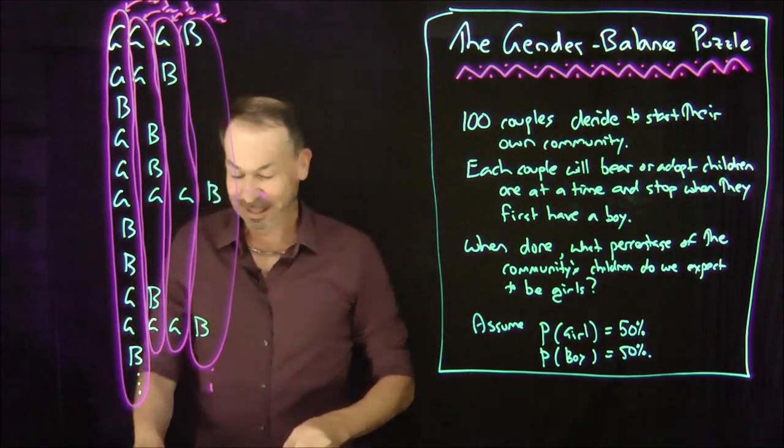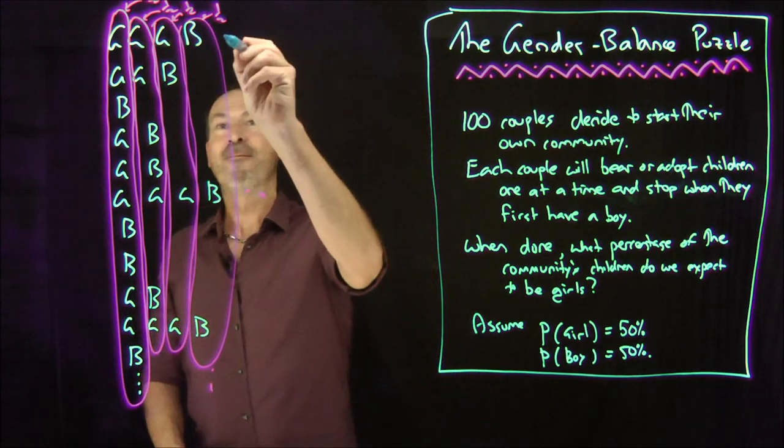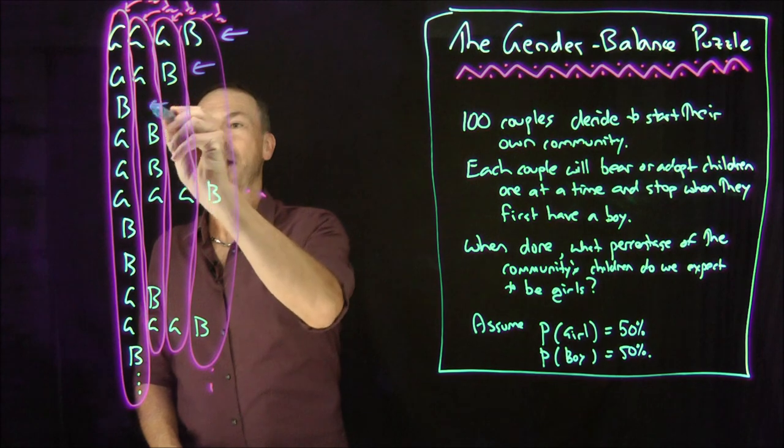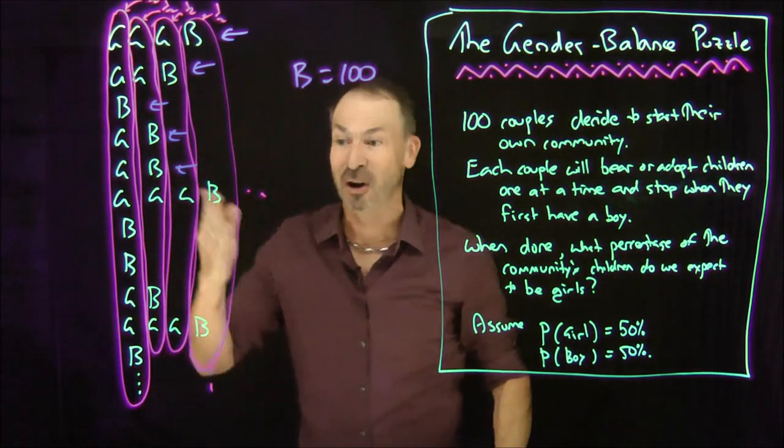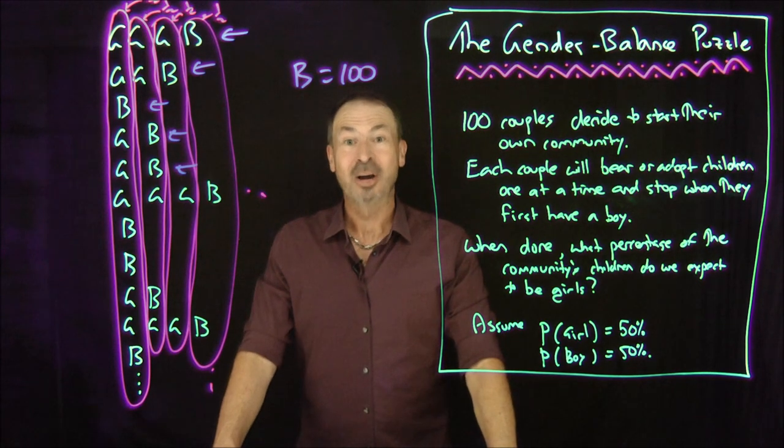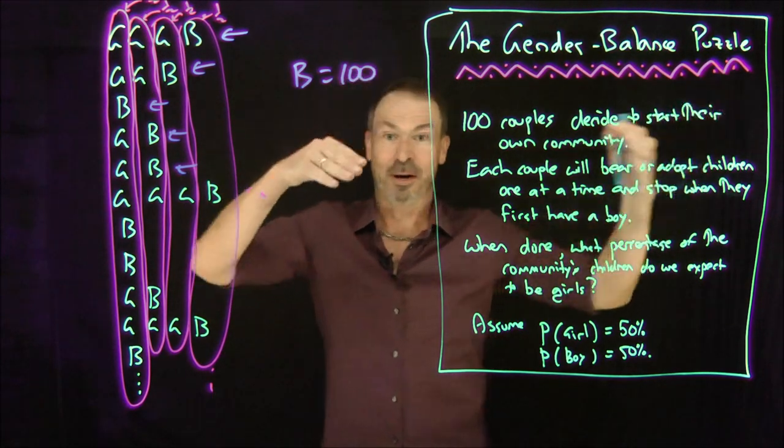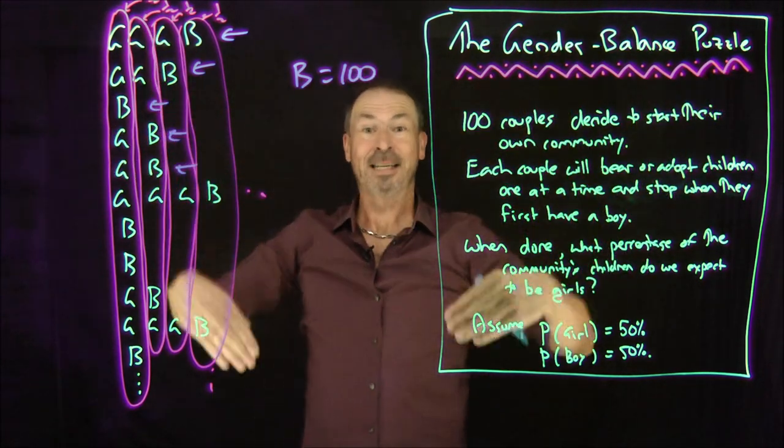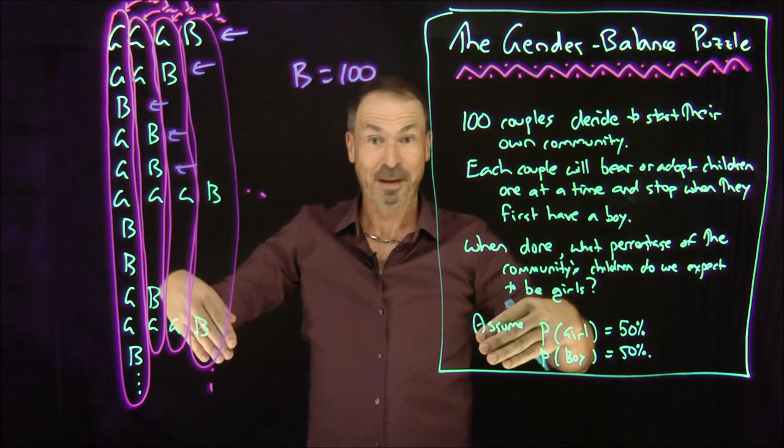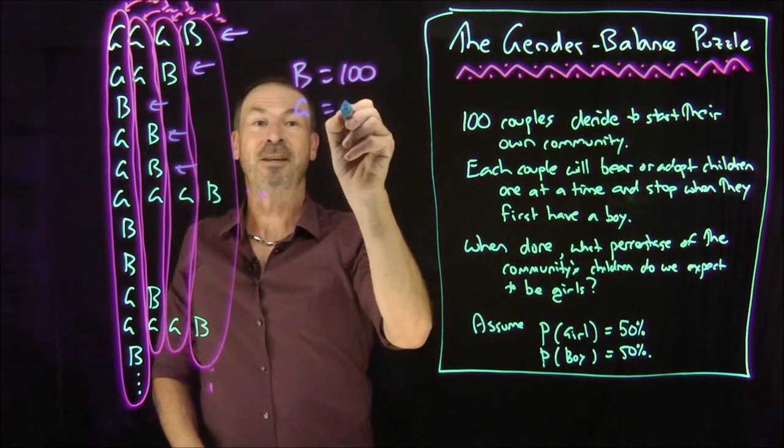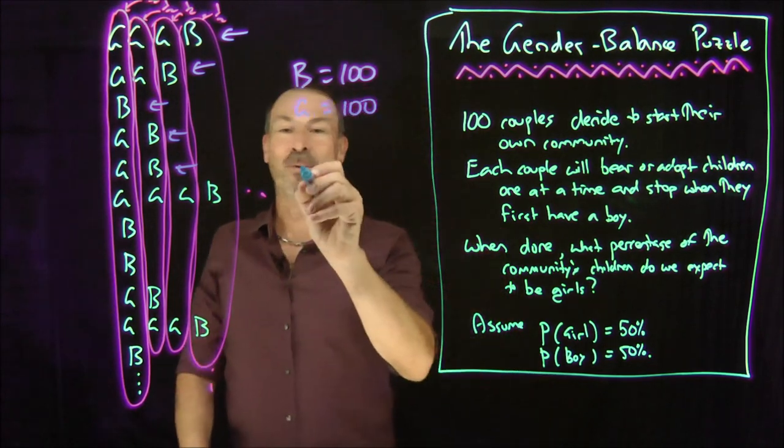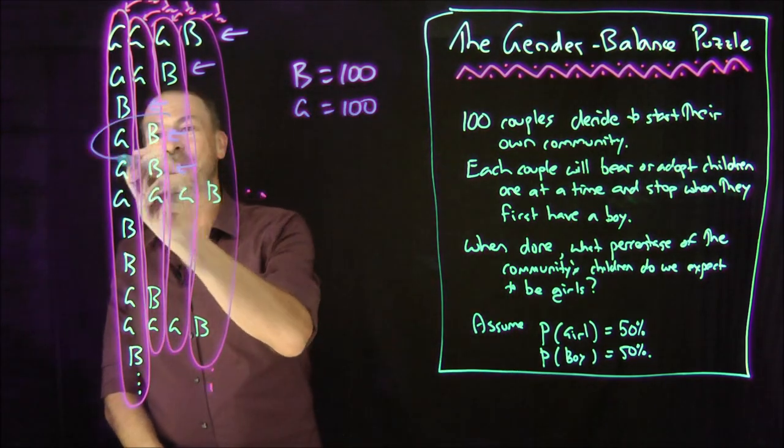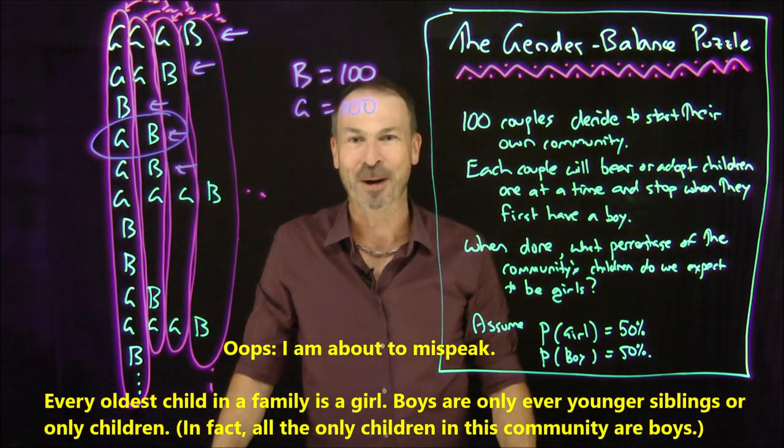Which is interesting, because if you think about this a little bit further, every couple has one boy, has exactly one boy, so we know there's going to be exactly 100 boys, because they stop when they have a boy. Which means, on average, for this experiment to go on in many different communities, we expect, again, half of the community's children to be girls, the number of girls we expect is also to be 100. That is, we expect every couple to basically be like this one. On average, every couple has one girl and one boy.